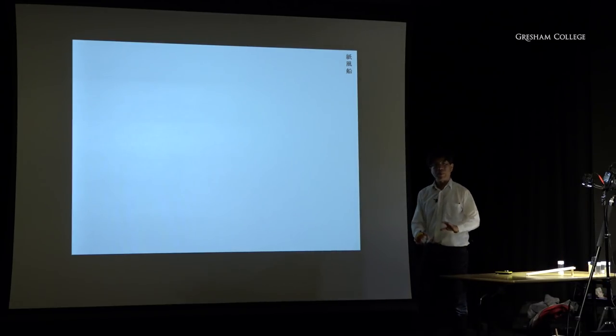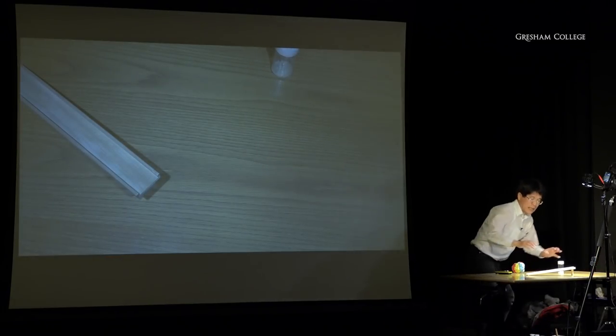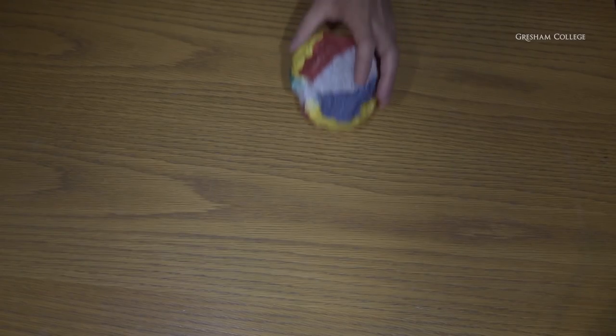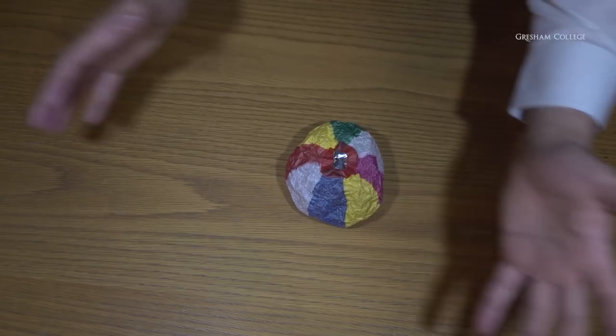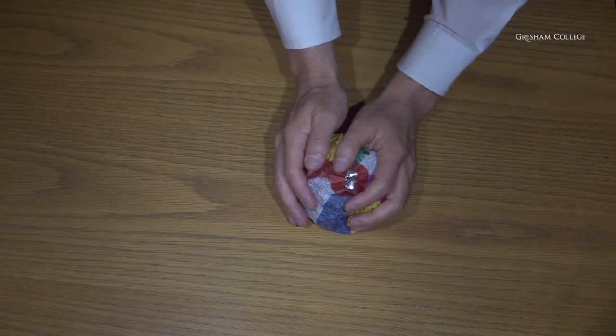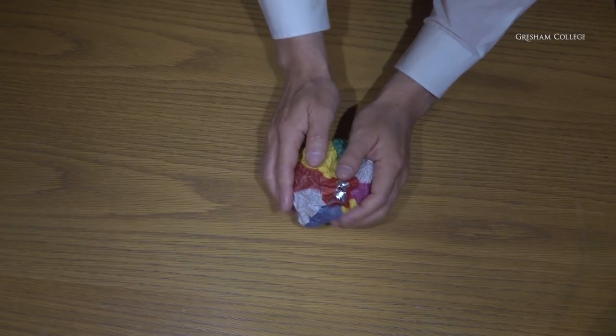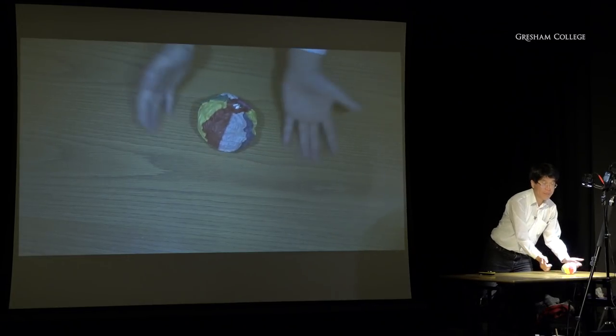Here is a more sophisticated kind of singularity. Here is a ball made of paper — a traditional Japanese toy called Kami Housen. There's a hole in the middle, and when you shrivel it you can blow into the hole to make it round again.